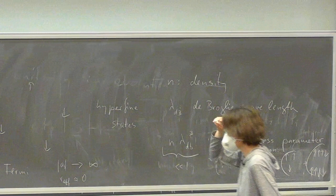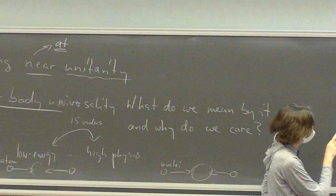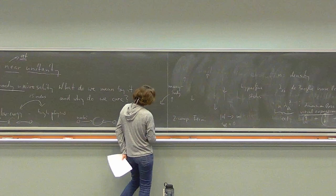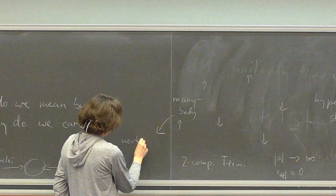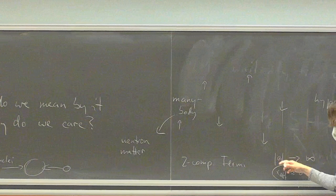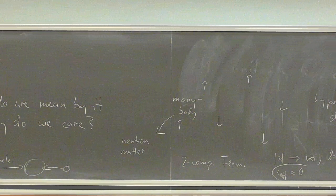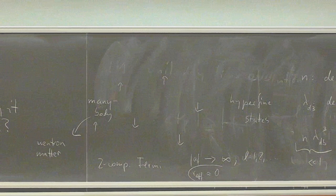A somewhat more complicated virial equation of state has also been used to describe neutron matter. There the zero-range assumption is less justified — we have to look at effective range corrections and higher partial wave components. But the idea is really the same, illustrating nice connections between atomic physics and nuclear physics at both the few-body and many-body level.